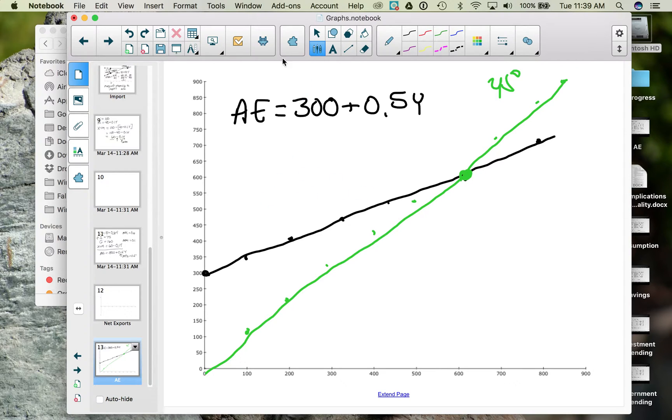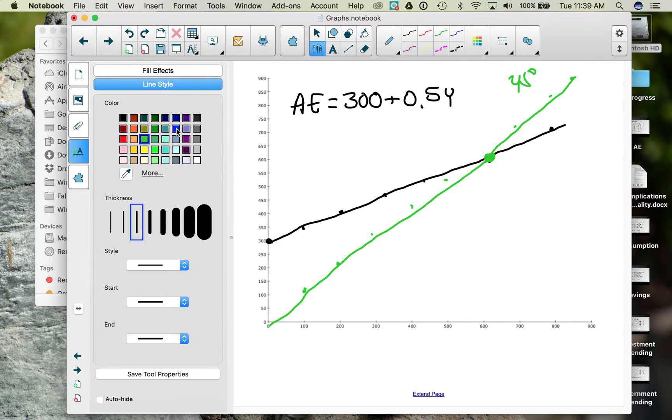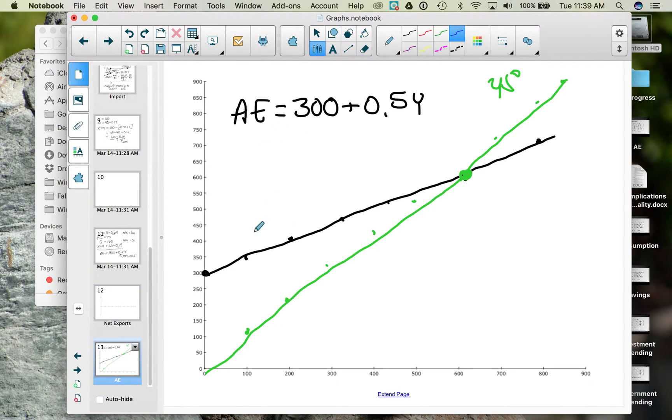So what happens when aggregate expenditures, that whole graph, shifts? For example, if our graph, which is aggregate expenditures equals 300 plus 0.5Y, what if that whole function shifts upward by, say, $100?